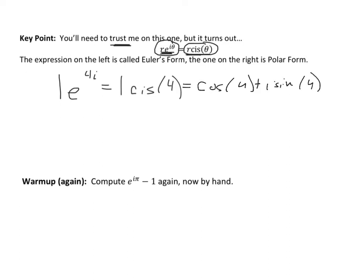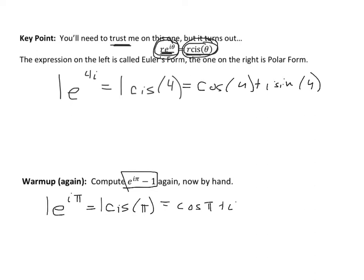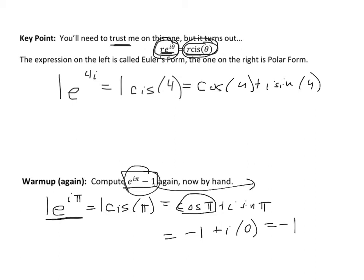So again, this thing on the left is called Euler's form, the thing on the right is polar form — this just allows us to convert between the two. So now I want to revisit that warm-up. How would I write e to the i·pi in polar form? Wouldn't this just be cis(pi)? Or really 1·cis(pi)? That means cosine(pi) plus i·sine(pi). Using our knowledge of the unit circle, cosine(pi) is negative 1, and sine(pi) is 0. So e to the i·pi is negative 1, and therefore e to the i·pi minus 1 is negative 2 — exactly what our calculator told us.